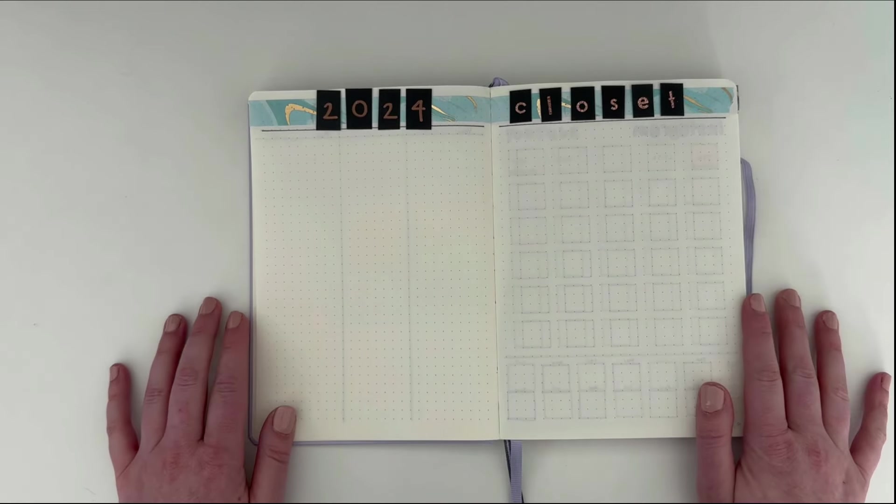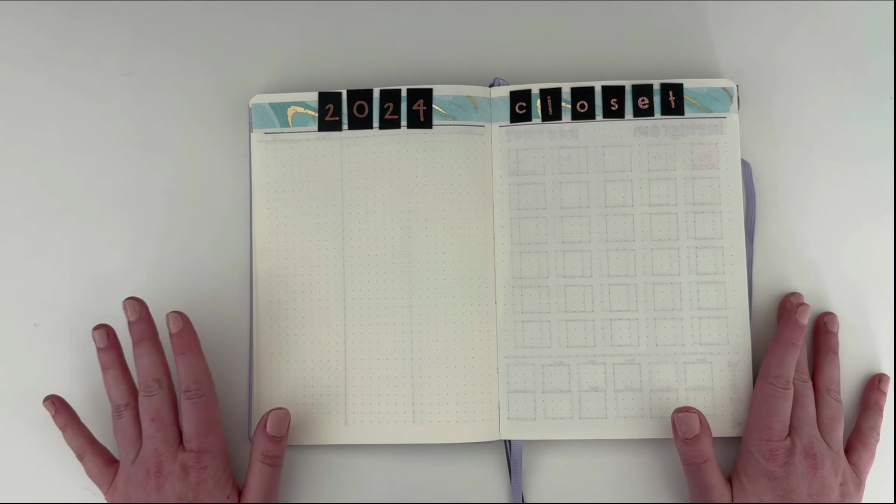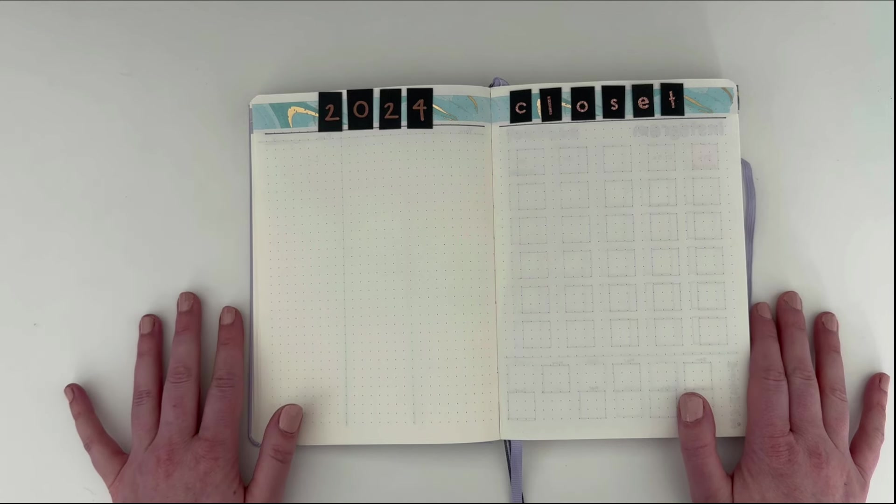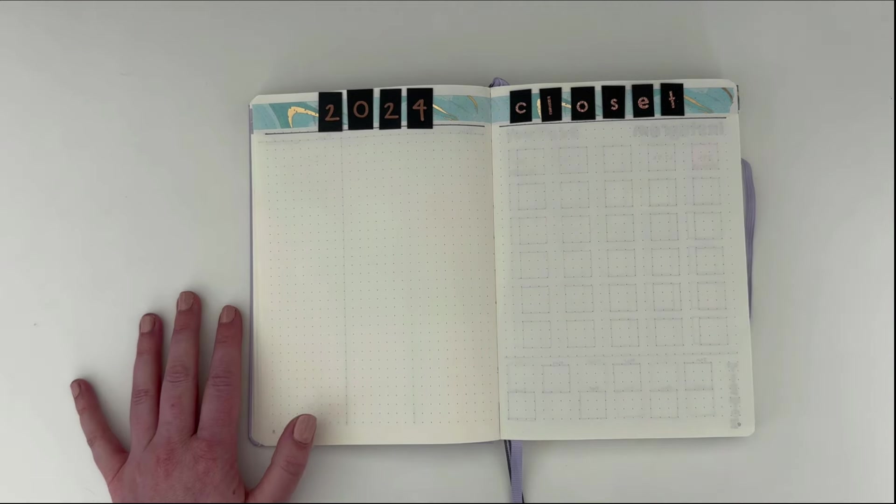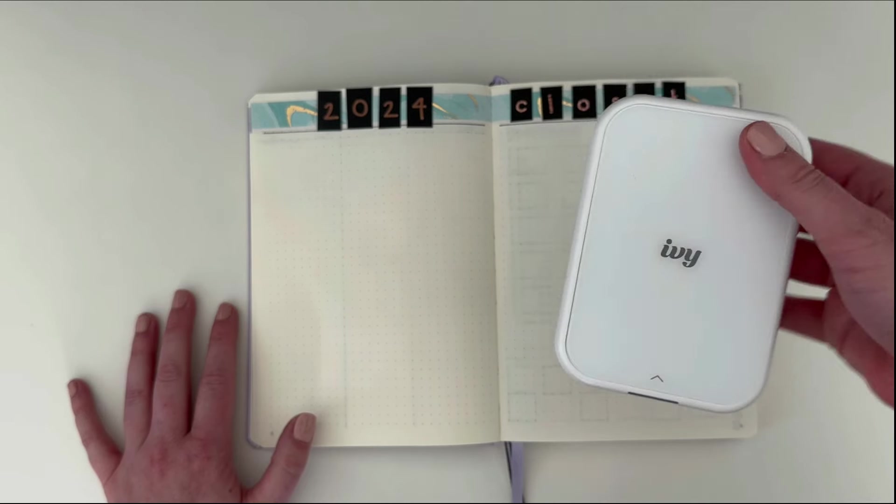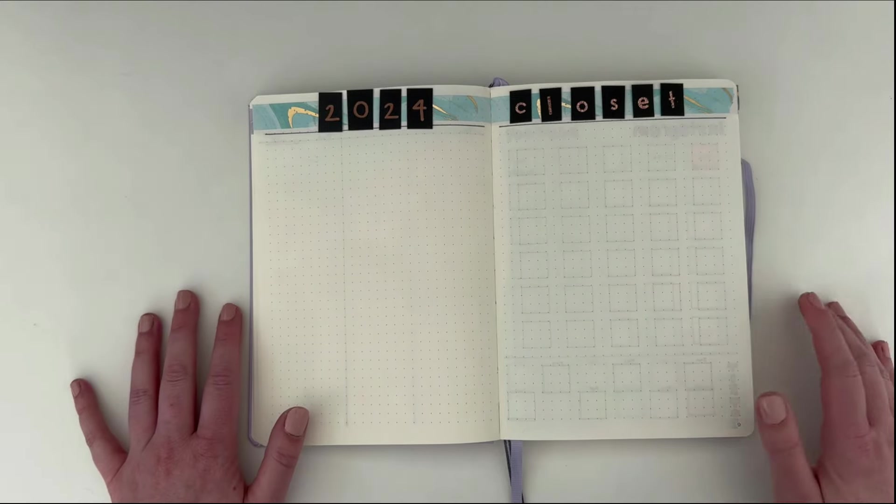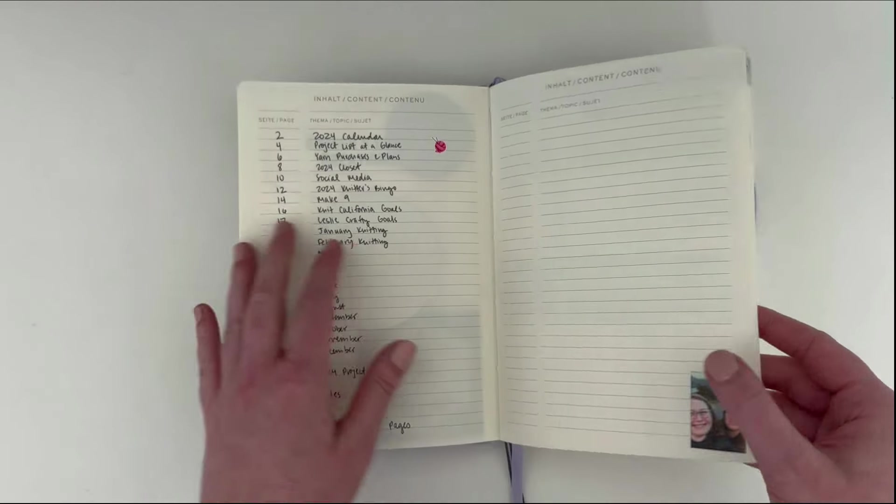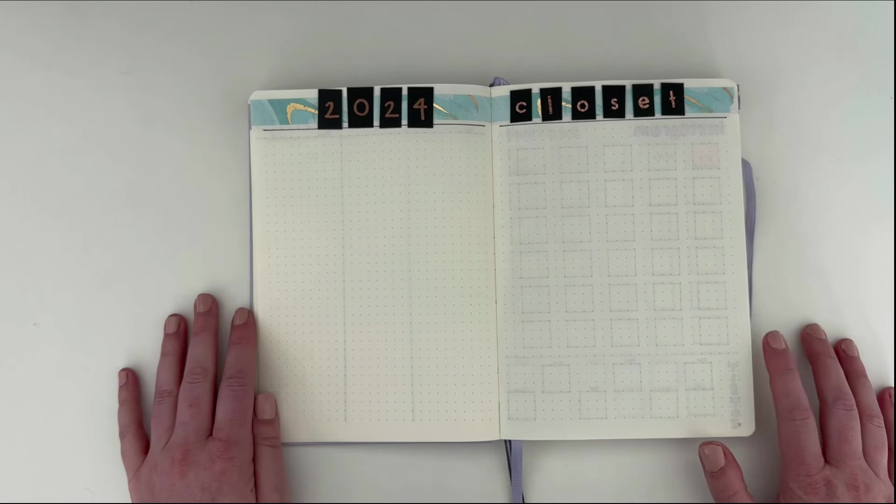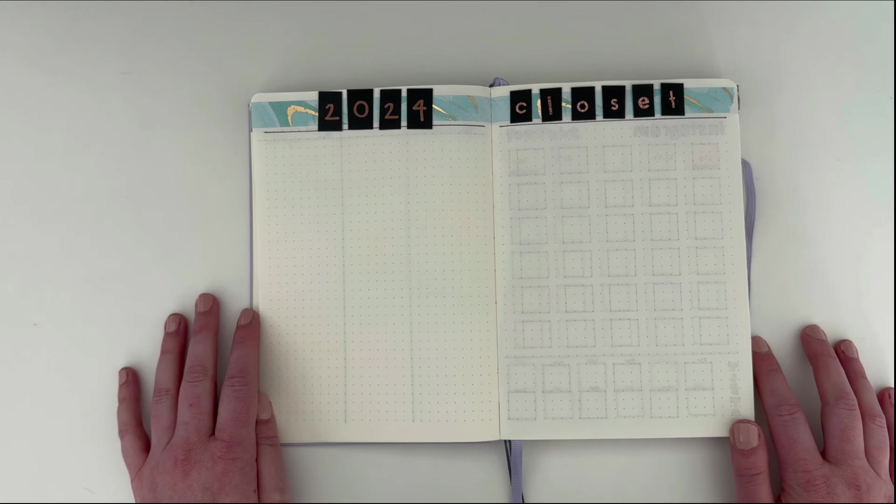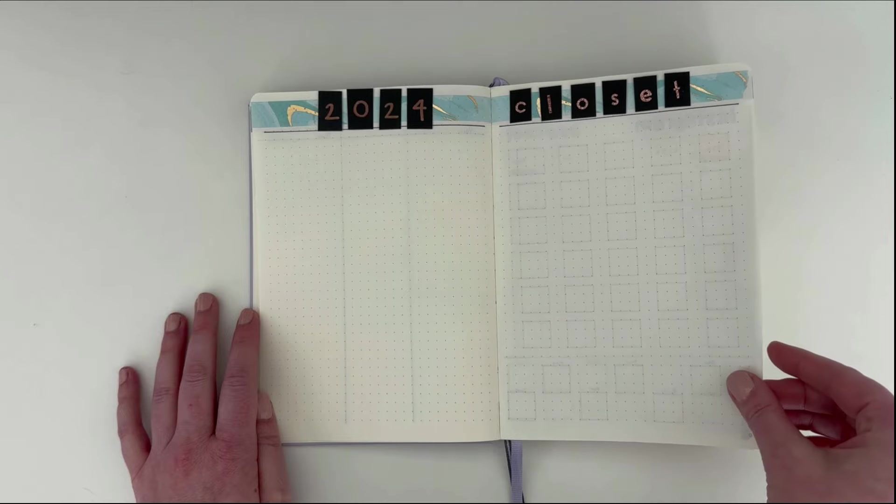Next is my 2024 closet. My plan for this spread is every time I have a finished object that is specifically for me, I'm going to take my finished object photo, print it out with a mini sticker printer. This is the Canon Ivy. I have a link for this from Amazon in the description box. It prints out on sticker photo paper. This is a quarter of the size and I can stick all of my photos in here of my finished objects for the closet that I'm creating in 2024. If you don't have a photo printer, you can always draw pictures of what you create and I think that would be really awesome too.